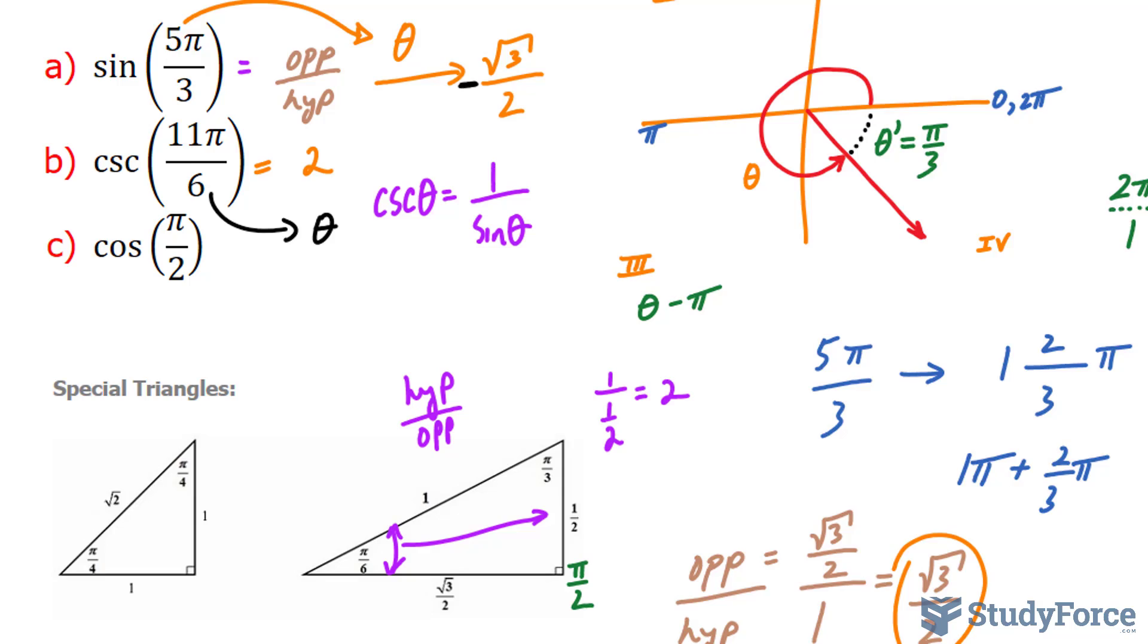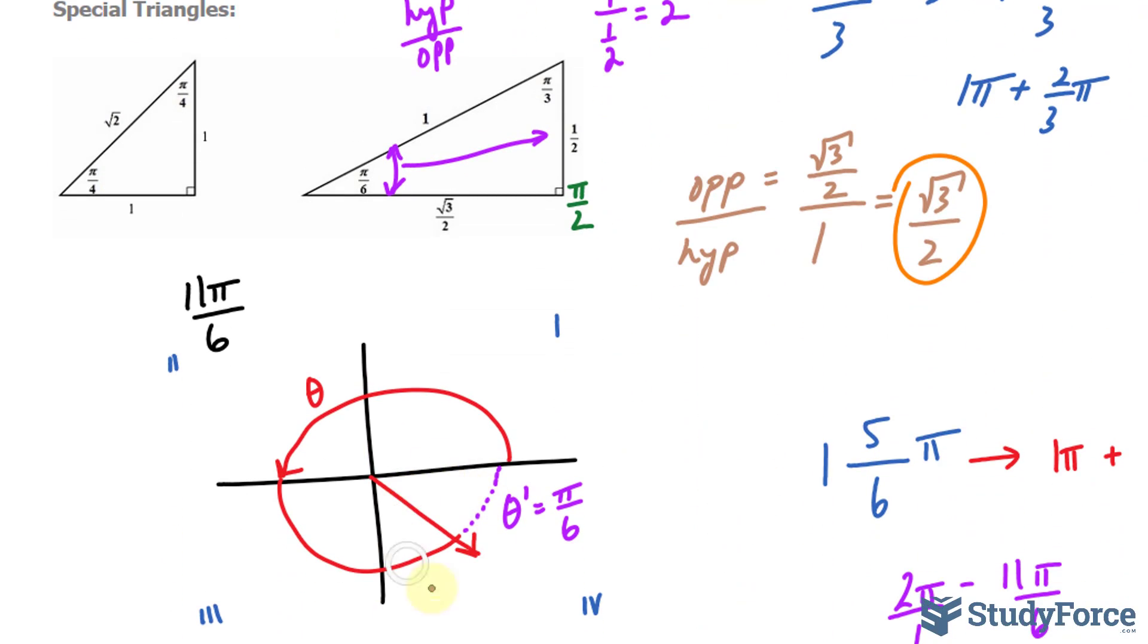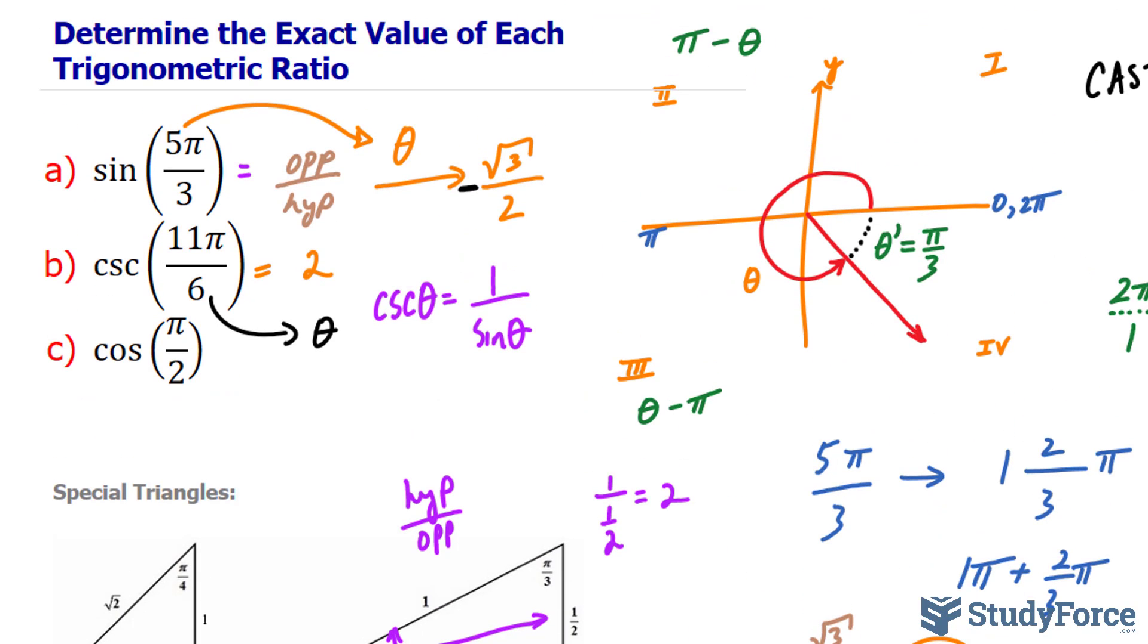Remember, only cosine is positive here. Cosine and its reciprocal secant. So cosine and secant are positive here. Everything else is negative. So our answer is negative 2.